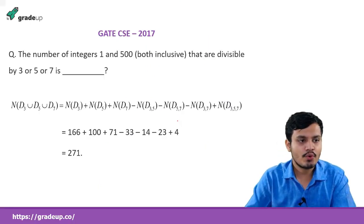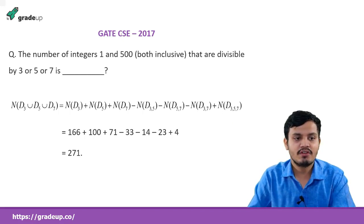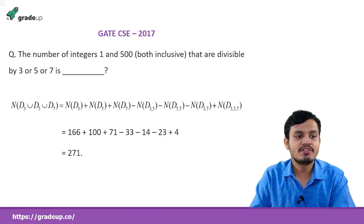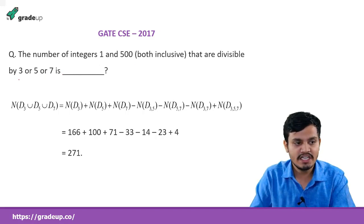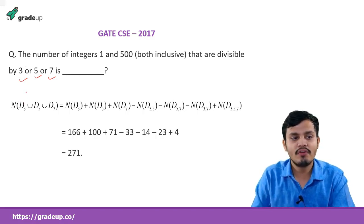The first question is: find the number of integers between 1 and 500, both inclusive, that are divisible by 3, 5, or 7 — either divisible by 3, either divisible by 5, or either divisible by 7. We will count all these numbers.